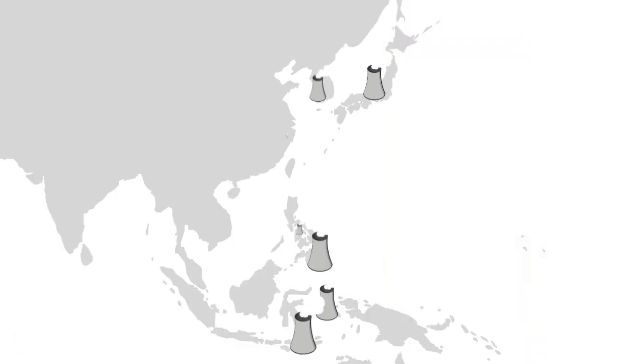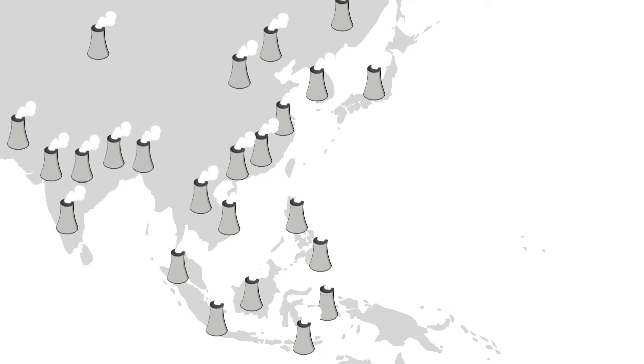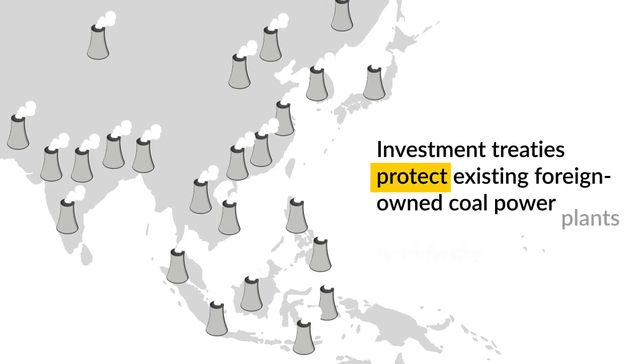The problem really was access to information, but then we came across a free database. We took data from that database and developed a new dataset that focuses only on foreign-owned coal plants. The database gave us the list of all the coal plants globally and the state they were currently in, and through that approach we managed to see the extent to which investment treaties protect existing foreign-owned coal power plants worldwide.